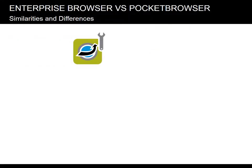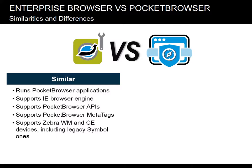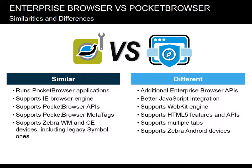So how exactly does EB compare to Pocket Browser? Enterprise Browser is similar to Pocket Browser in that it can run Pocket Browser applications, and it can be set to use and configure the Internet Explorer browser engine. Enterprise Browser and Pocket Browser both support MetaTags and the InvokeMeta function. They both also support Zebra Windows Mobile and Windows CE devices. Enterprise Browser differs from Pocket Browser in that it also provides support for Rho Elements, Rho Mobile, and HTML5 APIs. Support for the WebKit WebView is available in Enterprise Browser and not in Pocket Browser.